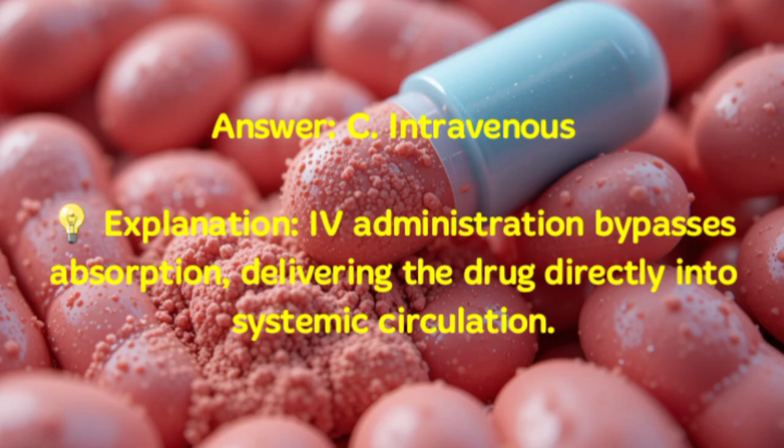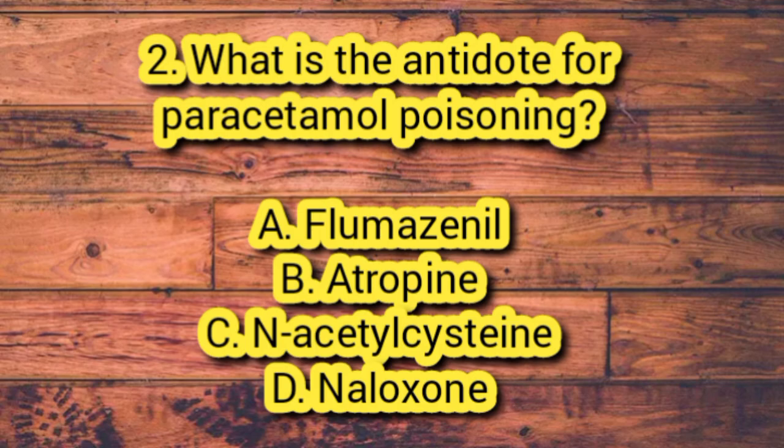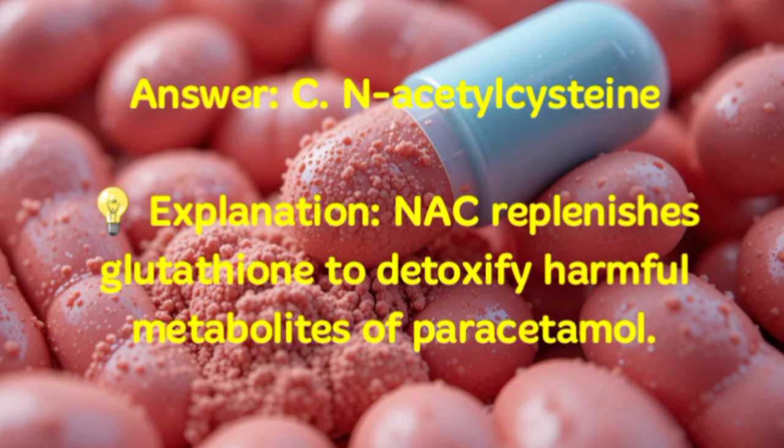Number 2. What is the antidote for paracetamol poisoning? A. Flumazenil. B. Atropine. C. N-acetylcysteine. D. Naloxone. Answer: C. N-acetylcysteine. Explanation: NAC replenishes glutathione to detoxify harmful metabolites of paracetamol.